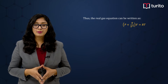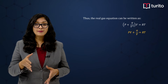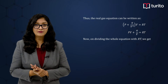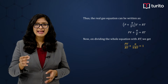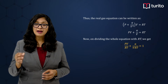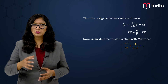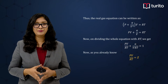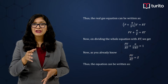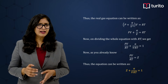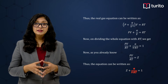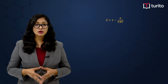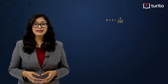Opening the bracket gives: PV + a/V = RT. Dividing the whole equation by RT: PV/RT + a/VRT = 1. Since PV/RT at n = 1 is Z, substituting gives: Z + a/VRT = 1. Transferring the term to the other side: Z = 1 − a/VRT.